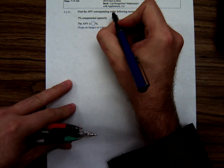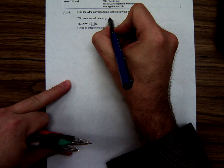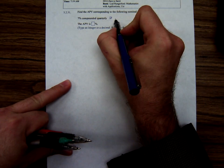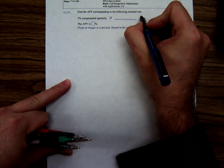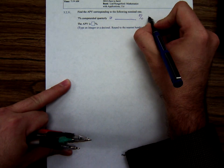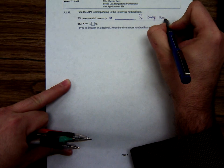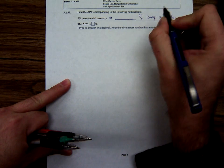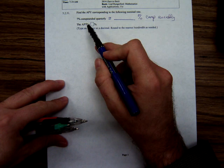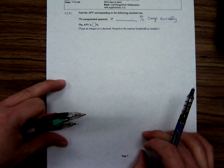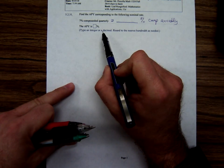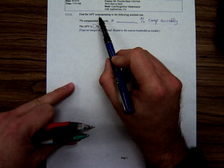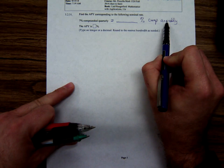When we convert this to an APY, when we find the APY, what we're trying to do is figure out 7% compounded quarterly is the same thing as what percentage compounded annually. The annual percentage yield, the APY, what economists refer to as the effective rate, converts the quarterly rate to an annual compounding rate.